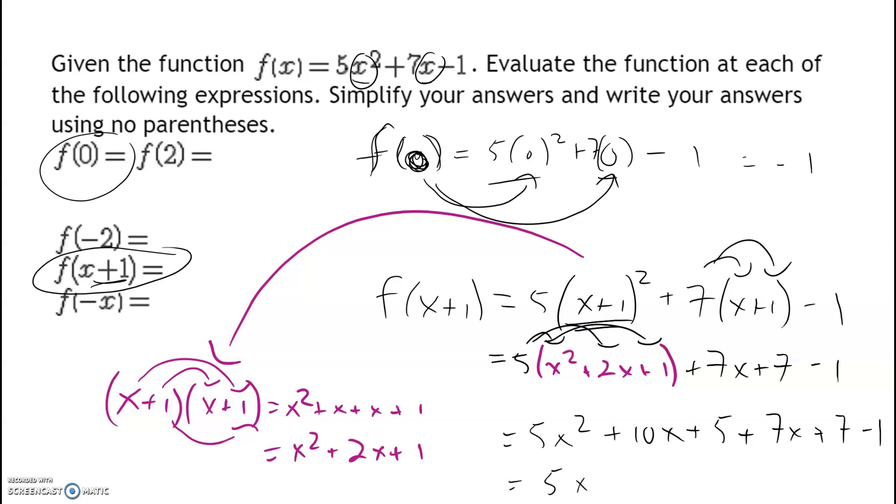And then usually we write these in descending order, so my highest exponent goes first. And I got a 10X and a 7X. If I've done this correctly, that should be 17X. And then I say five plus seven is 12 minus one is 11.